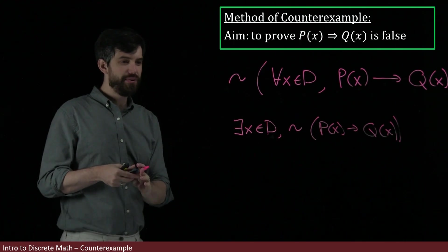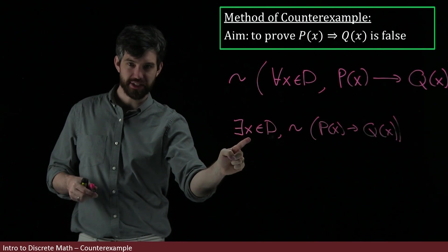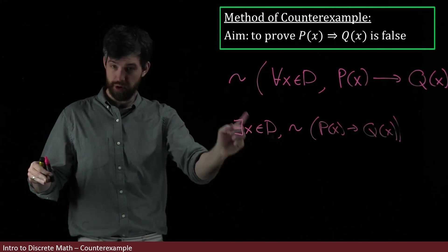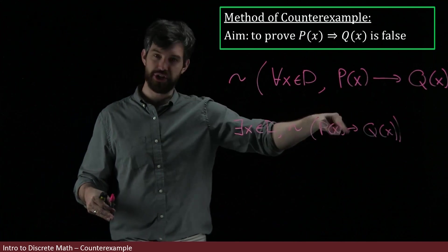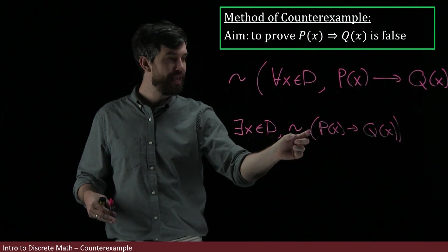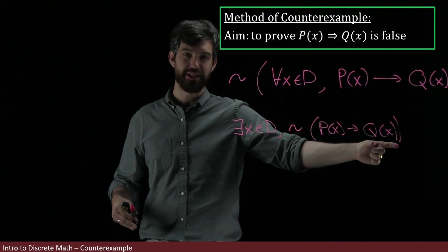And the idea here is that there is some X, not necessarily more than that, but there's at least one, where if you take that X and plug it into my predicates, it is not the case that the P of X implies the Q of X.